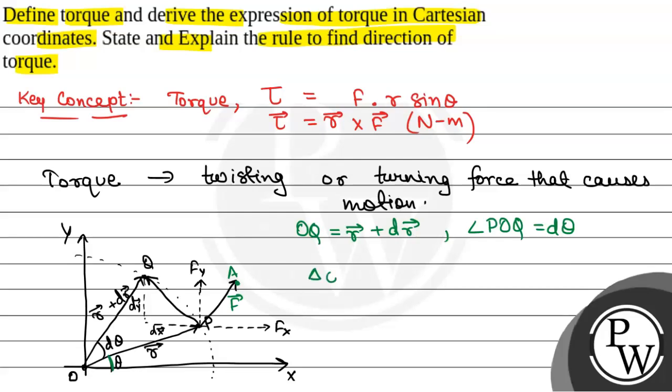Now in triangle POQ, we will have OP plus PQ equals OQ. OP plus PQ equals OQ. Since these are vectors, we will have PQ equals OQ minus OP, that is r plus dr minus r. So this will be equal to dr vector. So PQ will be equal to dr vector.